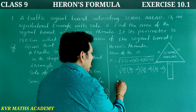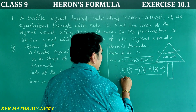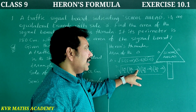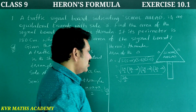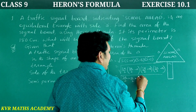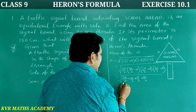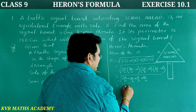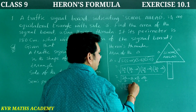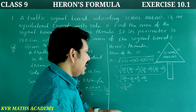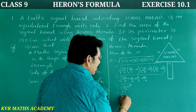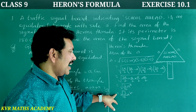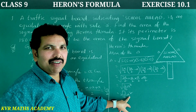That is equal to root of (3A/2) into (A/2) into (A/2) into (A/2), which gives root of (3/16) times A to the power 4. This simplifies to root 3 by 4 times A squared. So the area of an equilateral triangle equals root 3 by 4 times A squared square units.